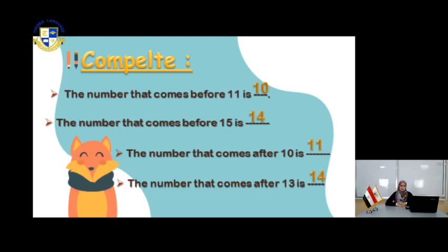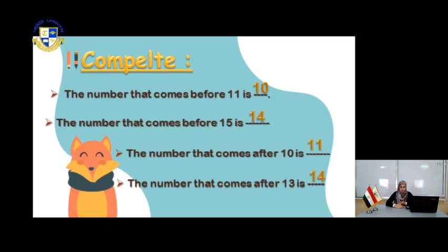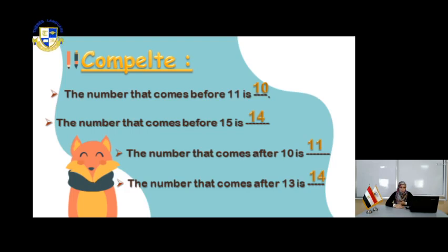The second question: the number that comes before 15. I need the number before 15. Count: 1, 2, 3, 4, 5, 6, 7, 8, 9, 10, 11, 12, 13, 14, and 15. So what comes before 15 is 14.